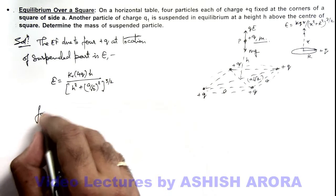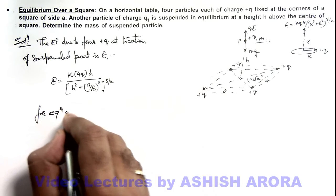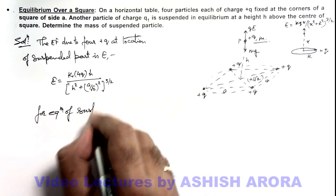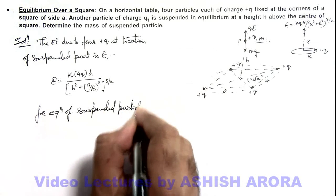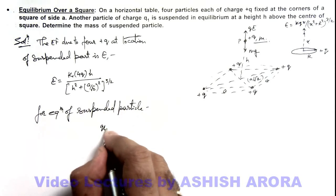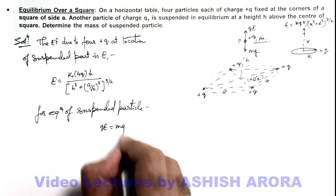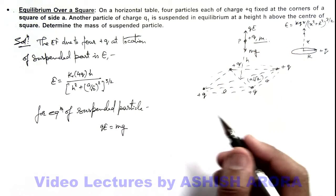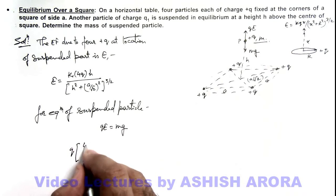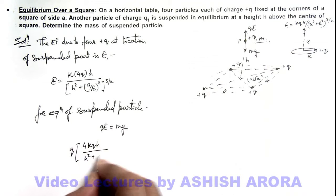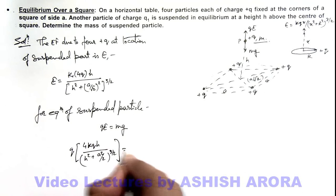For equilibrium of suspended particle, here we can write the value of qE is equal to mg because for equilibrium both the forces on this charge must be zero. So this can be written as q electric field here is 4kq h by h square plus a square by 2 to power 3 by 2 is equal to mg.